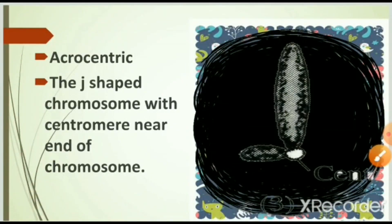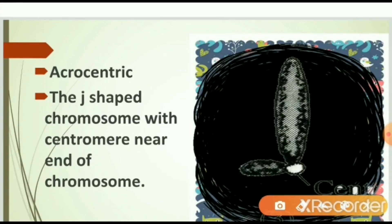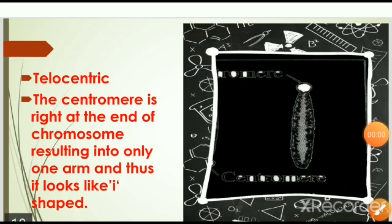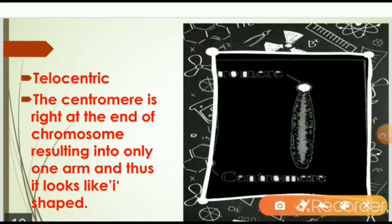The third type is acrocentric: it is a J-shaped chromosome with the centromere near the end of the chromosome. The fourth type is telocentric: the centromere is right at the end of the chromosome, resulting in only one arm, and thus it looks like an I-shape.